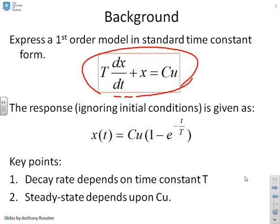Now we also know for the particular model here, assuming zero initial conditions, this is the sort of step response we get, x of t equals c u into 1 minus e to the minus t over capital T. So these two equations are things that we will use quite a lot in system design, because they give us insight.